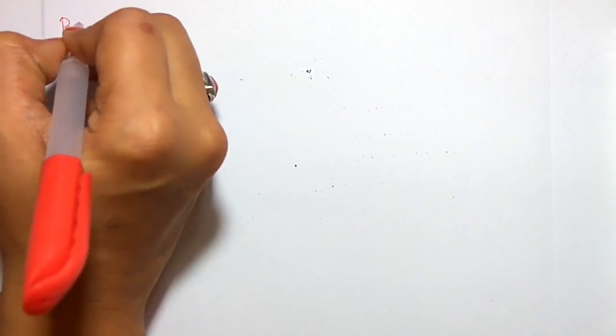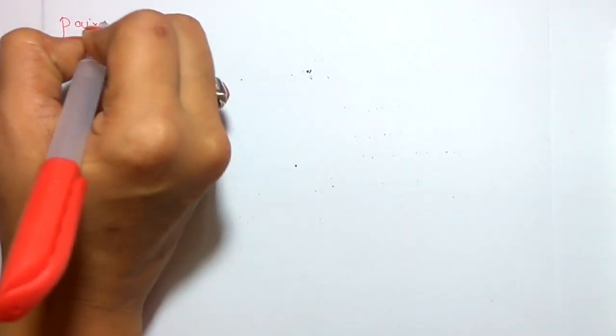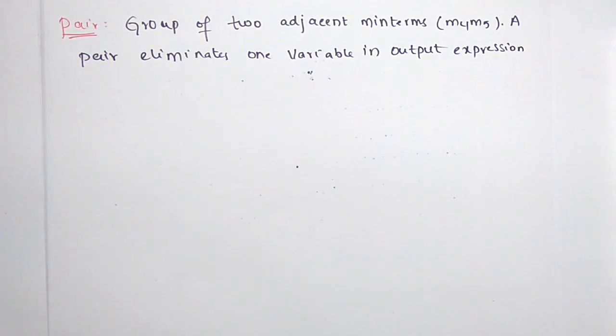First, let's see pair. A pair is a group of 2 adjacent minterms. For example, M4 and M5. A pair eliminates one variable in the output expression.